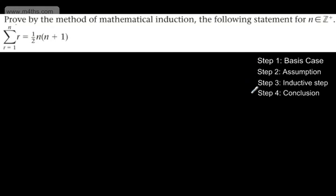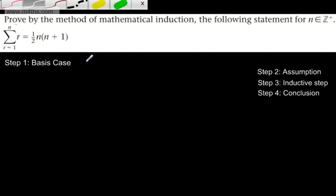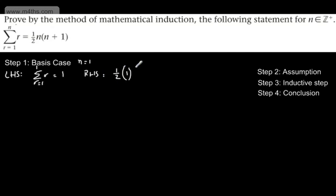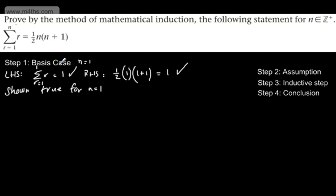Here are the four steps. We'll start off with our basis case, and I will take n to be equal to 1. All I'm going to do is sub this into the left-hand side, sub it into the right-hand side, and show that those two things are equal. The left-hand side gives us the sum from r equals 1 to 1 of r, which is clearly 1. The right-hand side gives us one half times 1 times (1 plus 1), which is one half times 1 times 2, also giving 1. We can see these are equal, so shown true for n is equal to 1. That completes the basis case.